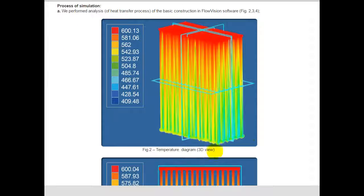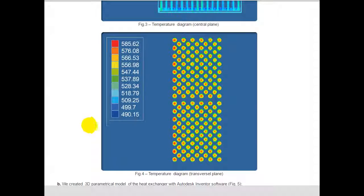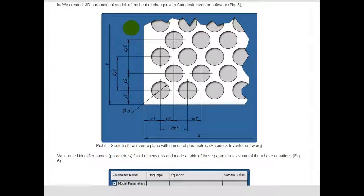We performed analysis of the heat transfer process of the basic construction in FlowVision software. You can see temperature diagram of 3D view, temperature diagram of central plane, and temperature diagram of transversal plane. We created a 3D parametric model of the heat exchanger with Autodesk Inventor software.